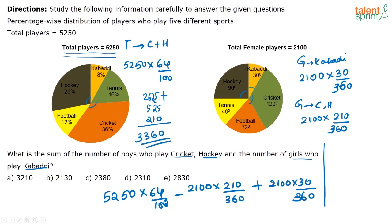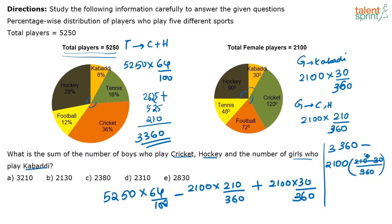So the total number of people who play cricket and hockey is 3360. Now, taking 2100 common from the last two terms: 210 minus 30 divided by 360 gives 180 by 360, which simplifies to 1 by 2. So you have 3360 minus 2100 by 2, that is 3360 minus 1050. The answer is 2310, which is option D.